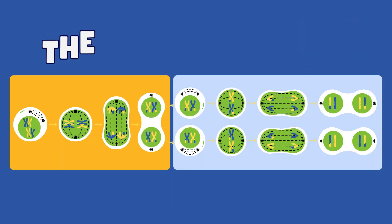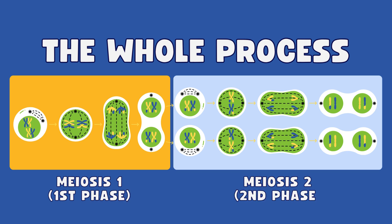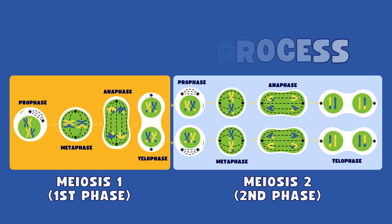To summarize, meiosis consists of two main phases: meiosis I and meiosis II. Each phase includes four stages — prophase, metaphase, anaphase, and telophase — which we have just covered. Together, these stages ensure the accurate division of genetic material.